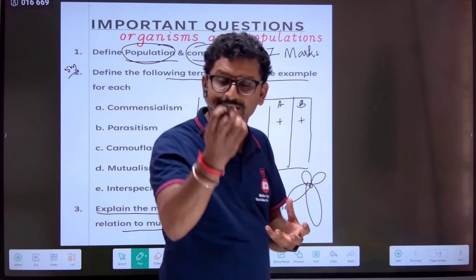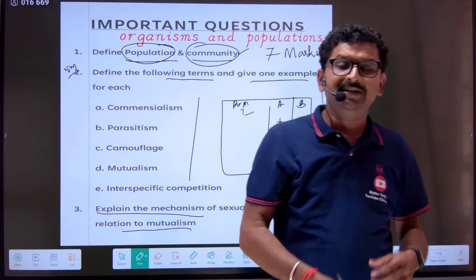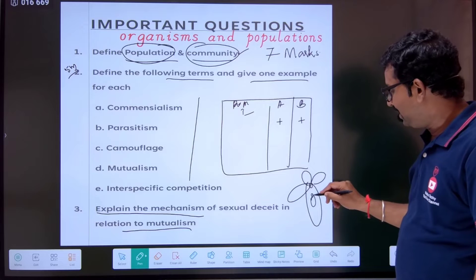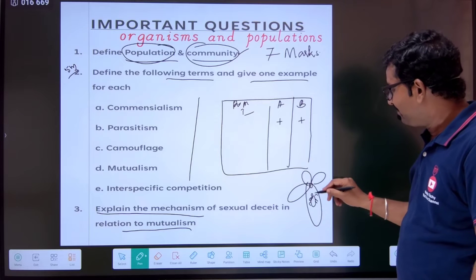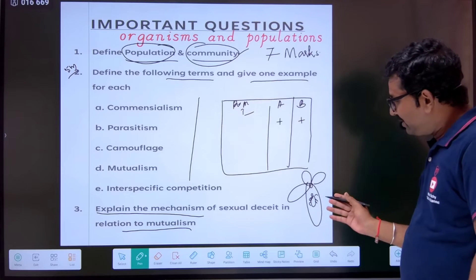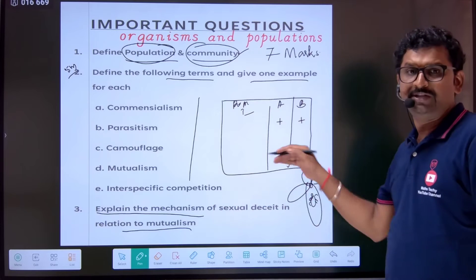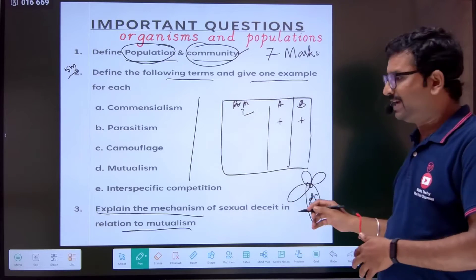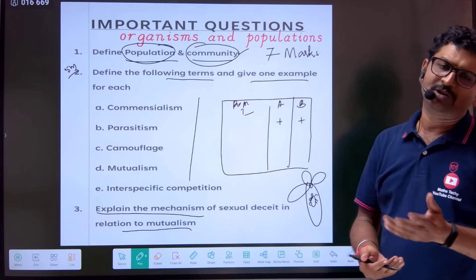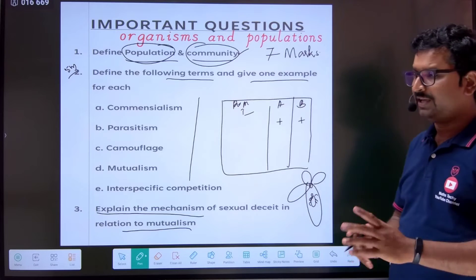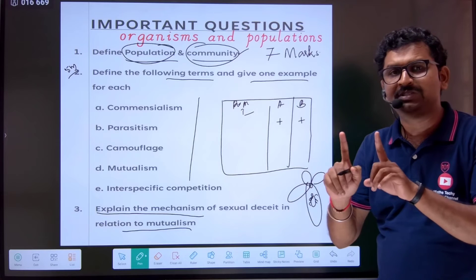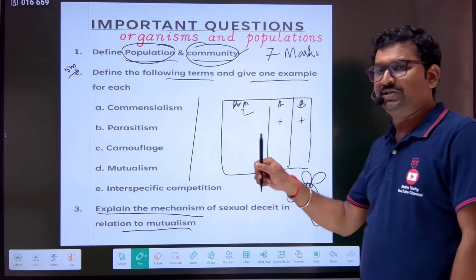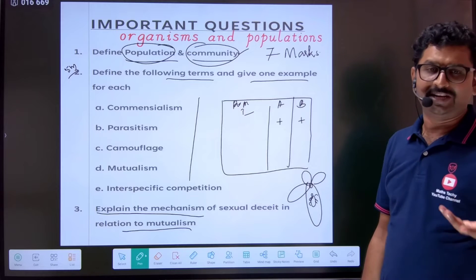The insect comes and attacks the flower and performs pseudo-copulation. This flower visit helps with pollination, and the insect population is also benefited. The interaction benefits both — making it a mutualism interaction.